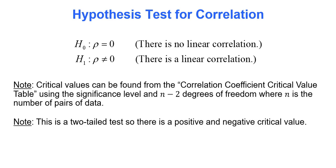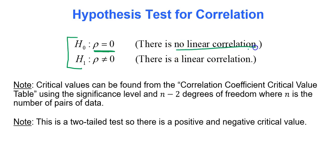For a test for linear correlation, the hypotheses are always the same two. The null hypothesis is rho equals zero — that's the population correlation coefficient — and the English translation is there is no linear correlation. The alternative hypothesis is always rho is not equal to zero, meaning there is linear correlation. Notice equality always goes with the null hypothesis, and not-equal-to goes with the alternative. This is always a two-sided test.